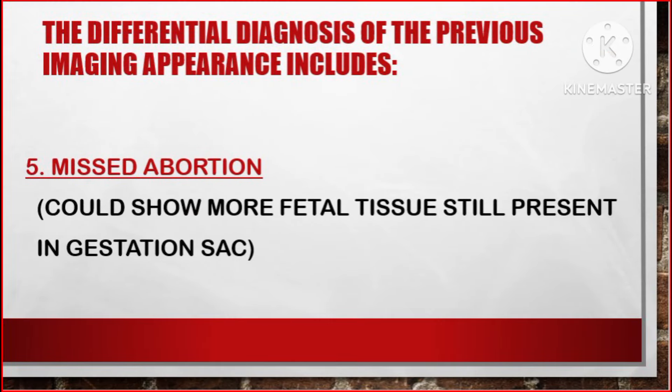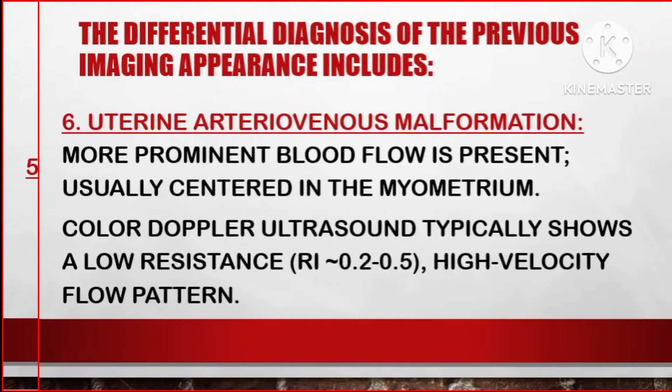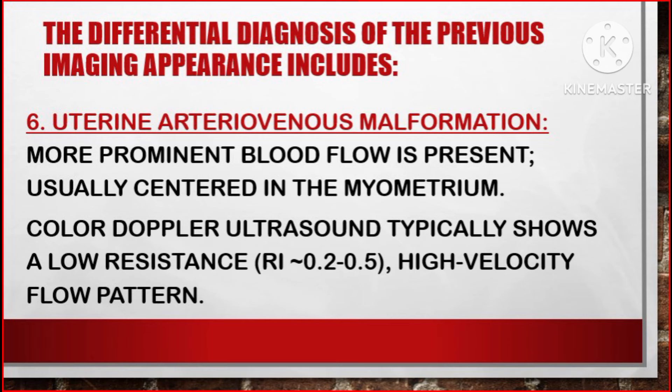Number five, missed abortion — but it could show more fetal tissue still present in the gestational sac. Number six, uterine arteriovenous malformation — but in this case, more permanent blood flow is present, usually centered in the myometrium, and color Doppler ultrasound typically shows a low resistance between 0.2 and 0.5, high velocity flow pattern.